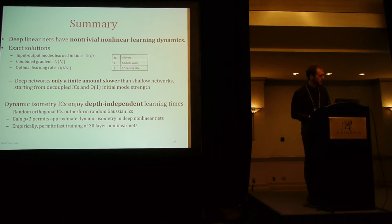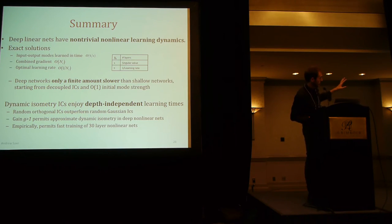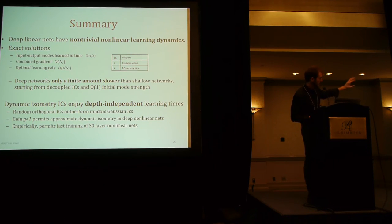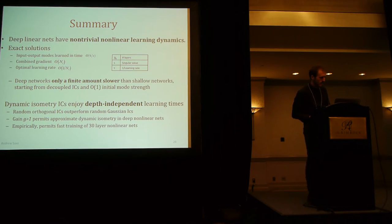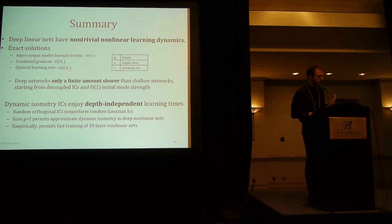To summarize: deep linear networks have interesting and complex dynamics even though the math is relatively simple. We've shown some exact solutions for these dynamics answering questions about learning time, the scaling of the combined gradient, and optimal learning rates. Perhaps counterintuitively, deep networks can in fact learn quickly provided you start with these decoupled initial conditions. The property of dynamic isometry seems to enjoy depth-independent learning times, and the suggestion is to replace a random matrix with a random orthogonal matrix as your initialization — possibly scaled up slightly — which might lead to faster convergence.